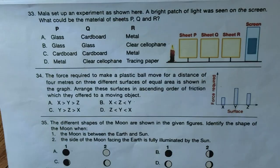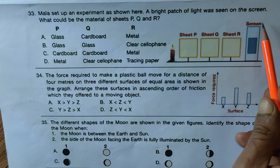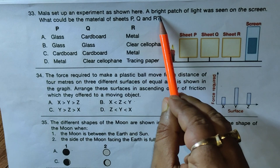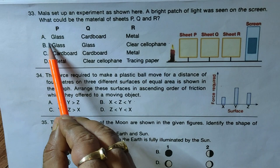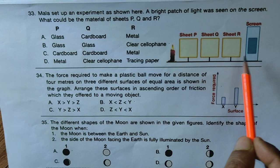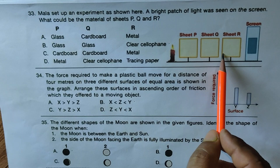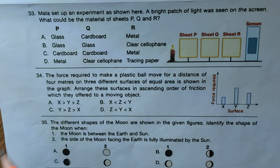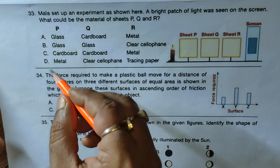Question thirty-three: Mala set up an experiment and a bright patch of light was seen on the screen. What could be the material of objects P, Q, and R? Option A — P is glass, Q is cardboard, R is metal: metal and cardboard block light, so not possible. Option B — P is glass, Q is glass, R is clear cellophane paper: light passes through glass and cellophane to reach the screen and create the bright patch — that is the possible answer. Options C and D include cardboard or metal which block light. Only option B is correct: glass, glass, and clear cellophane.